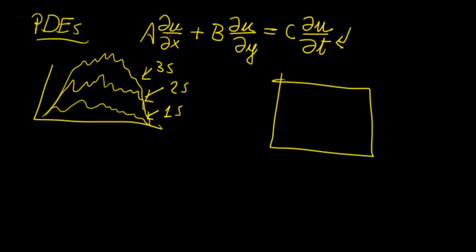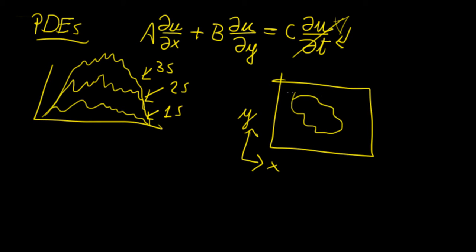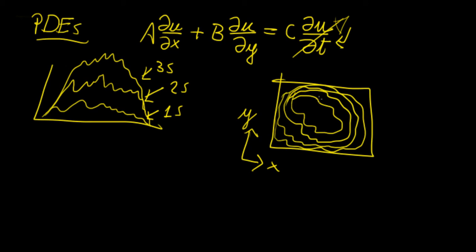Whereas some functions, say a function of two variables x and y, if we didn't have a time term but rather some constant or function of x or y, we would end up getting a function that does not vary with time and is stationary. This would be something like a beam with external forces applied — it gives you the stress distribution across the structure, which remains the same as long as the external forces remain constant.